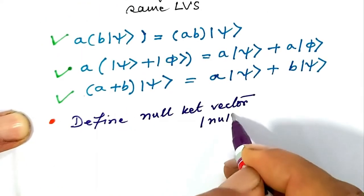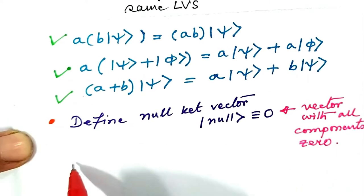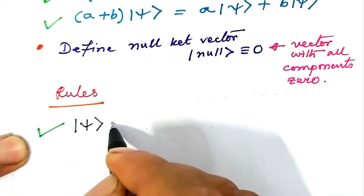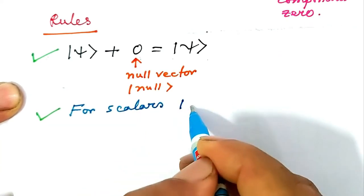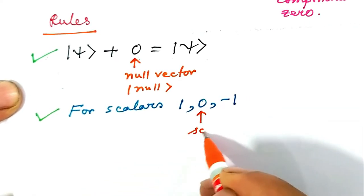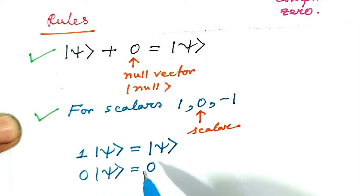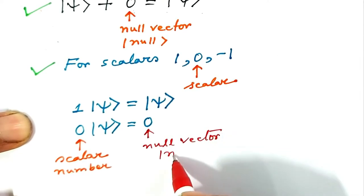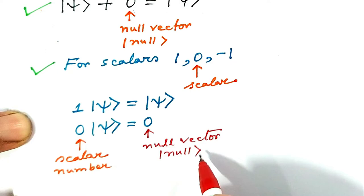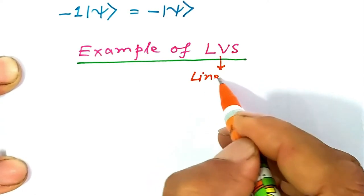Also, (a plus b) ket-psi equals a ket-psi plus b ket-psi. We define a null ket vector, ket-null, identically represented by zero — a vector with all components zero. The rules are: ket-psi plus null-ket equals ket-psi. For scalars 1, 0, −1: one times ket-psi is ket-psi; zero (scalar) times ket-psi is the null ket; minus one times ket-psi is minus ket-psi.